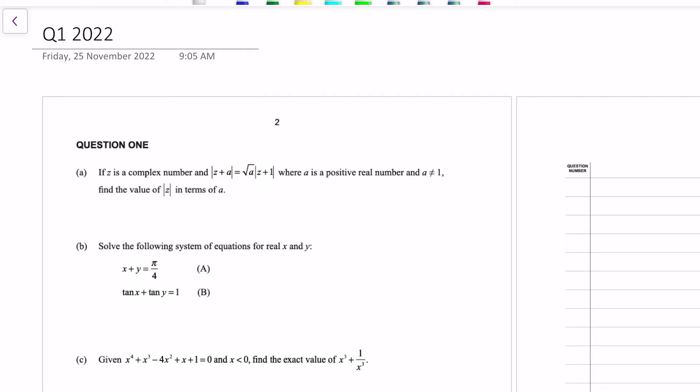Kia ora and welcome to this video on question 1 of the 2022 School Calc exam. This exam had three parts to every question. Question 1 here is quite algebraic. The first is complex numbers, part B is trig, and part C is algebra. I'm going to run through the three problems as a student. I will explain some steps, but I've got a couple of alternative solutions that I've found that will be at the end of the video. So, one for part A and one for part C.